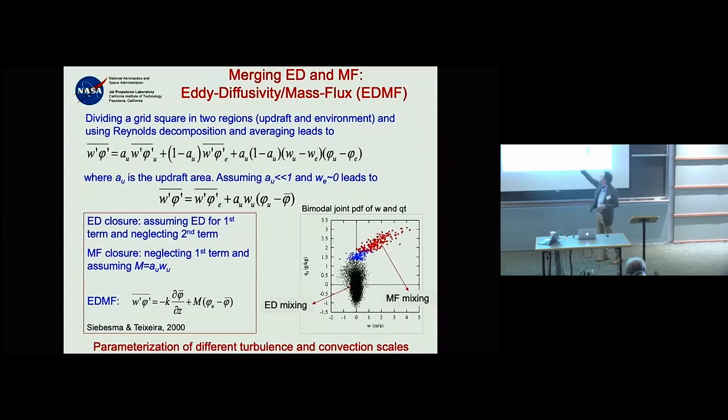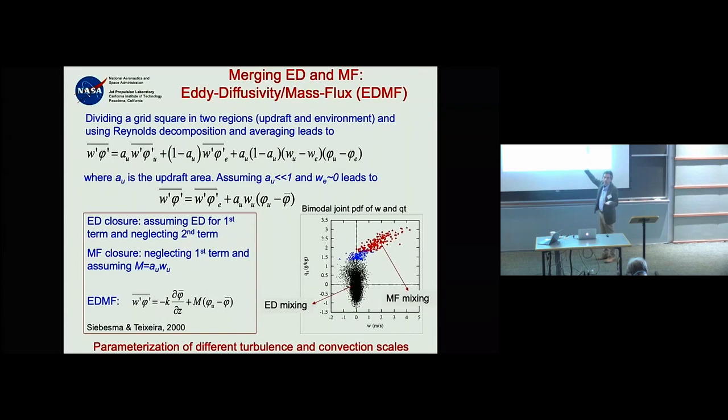This is illustrated with an LES: if you take a horizontal cut about one kilometer above the surface and look at the joint distribution of vertical velocity and total water anomaly, you get a roughly Gaussian distribution for the quiet environment and a very active tail where vertical velocities and water content are very high.